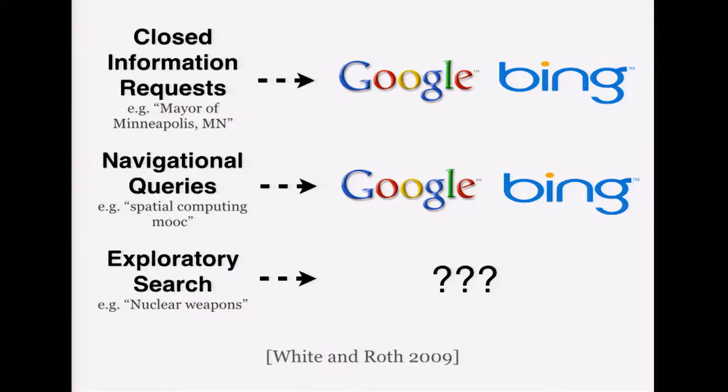So as it turns out, this is actually a very well-known situation in the information retrieval literature. Google and Bing are known to be outstanding at what are called closed information requests, like finding out who the mayor of Minneapolis is, and they're also known to be outstanding at navigational queries, like take me to the webpage for the spatial computing MOOC, but they're much worse at what is known as exploratory search.